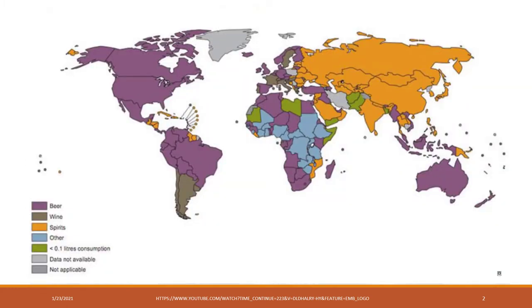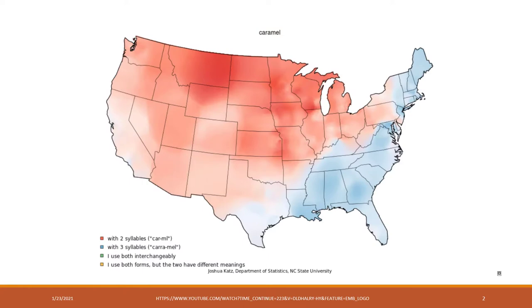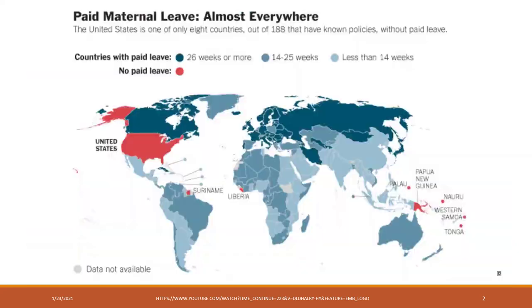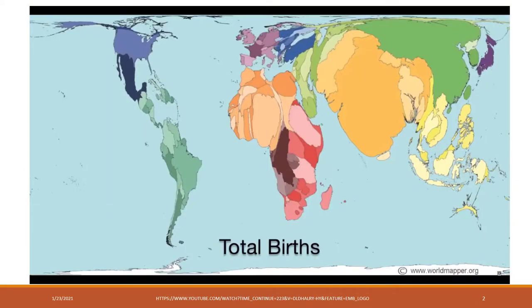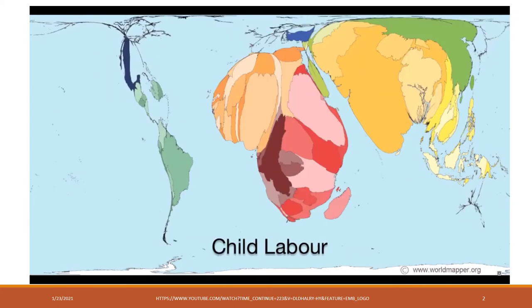Maps can also show preferences — for alcoholic drinks, for sides of the road, for how to pronounce 'caramel' or what to call soda, or systems of measurement. The US is lagging a little bit behind in the metric system, also in maternity leave, also in executing juveniles. It's a little embarrassing.